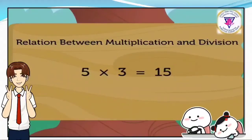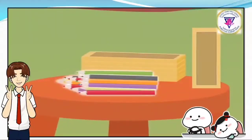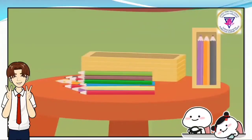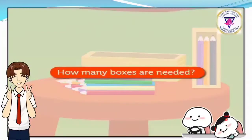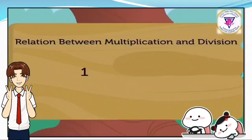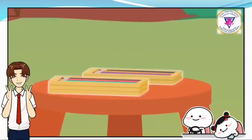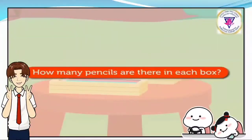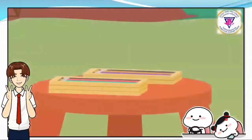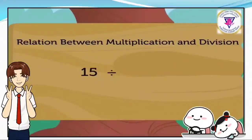Now let us look at it in another way. There are 15 pencils. If each box can accommodate 3 pencils, how many boxes are needed? We divide 15 by 3 to find the quotient. 15 divided by 3 is equal to 5. Also, given 5 boxes and 15 pencils, how many pencils are in each box? We divide 15 by 5, and 15 divided by 5 is equal to 3.